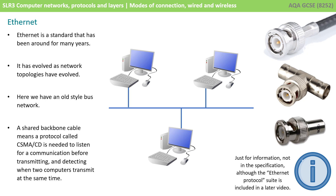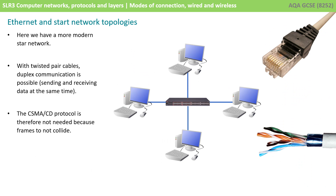Bus networks are not really part of the GCSE specification, but understanding the history of this protocol is helpful. What you do need to be aware of is star networks, where Ethernet is the chosen standard. With twisted pair cables, duplex communication is possible — that means sending and receiving data at the same time, because different wires are used for transmit and receive. Therefore, the CSMA-CD protocol is not needed, because frames can't collide.